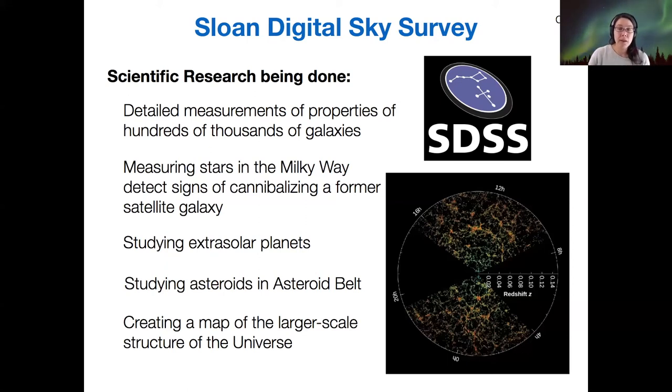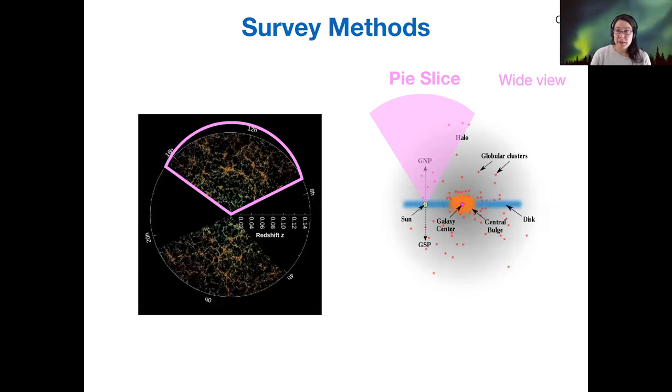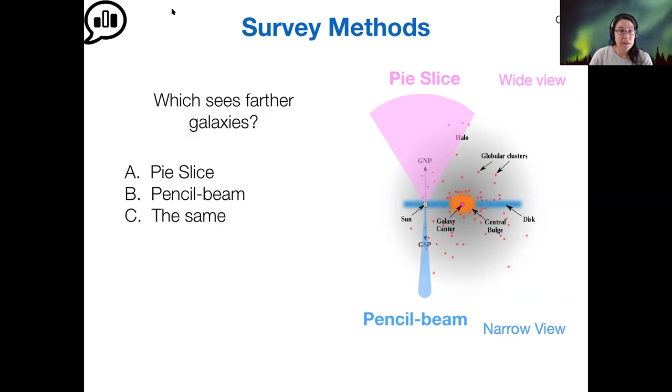There's a couple of different methods that you can use when you're making a map of galaxies. You could either take what we call a pie slice—that's a wide view of galaxies—or a pencil beam survey, which is a very narrow view. My question for you is which of these survey types would you be able to see farther with?